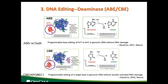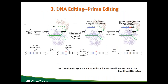Next is prime editing. This method was published in 2019 by Professor David Liu, and can be called a breakthrough in the field. We know that with deaminase, you only have a few selections — you're only able to change A to G or C to T, but you cannot change A to C, etc. However, using prime editing, it can break the limitation of these selections — it can change any base to any other base you want. Another difference is that this activity is dependent on reverse transcriptase. You can search for this publication or let us know your favorite topic.